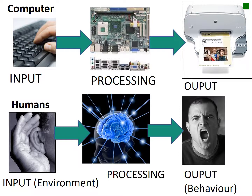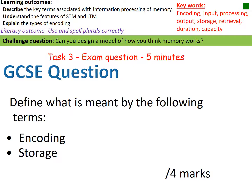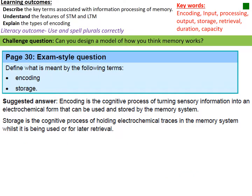To encode that skyscraper, you might scale it down into a smaller 2D image your mind can process. You then store that encoded image in your brain for later. When someone asks if you saw the Empire State Building, you retrieve that picture back into your mind's eye — that's the retrieval process. The output is being able to talk about it, such as describing what it looked like.